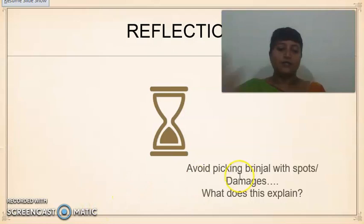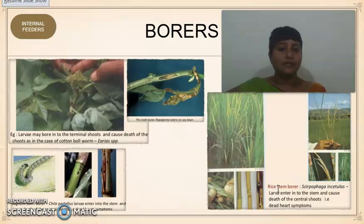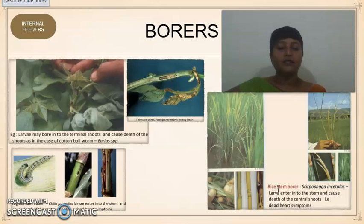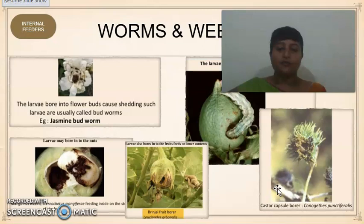Consider the common statement: avoid picking brinjals with spots and damages. This cautions that an external hole indicates the presence of a worm or damage inside. These are caused by borers — internal feeders. They get into the body of the plant, feed, and complete their life cycle inside, emerging only when it is complete. Common internal feeders include Helicoverpa, Leucinodes orbonalis, and Bernalis. There are also leaf miners and galls caused by midges.